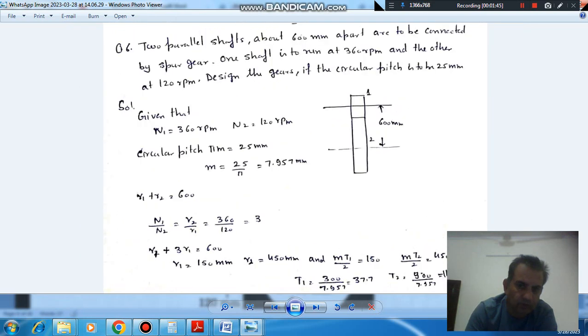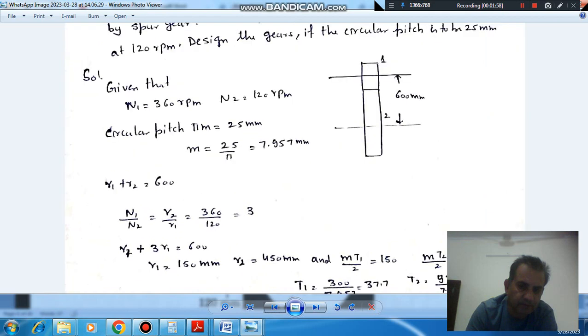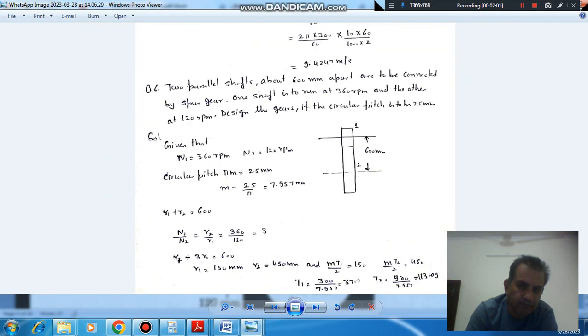And so now we have R1, we have R2. We can calculate number of teeth. So R1 is 150, so mT1 by 2 is 150. So T1 is 300 by m, which is approximately 37 or 38. And mT2 by 2 is 450. So T2 can be calculated, which comes out around 113 or 114.